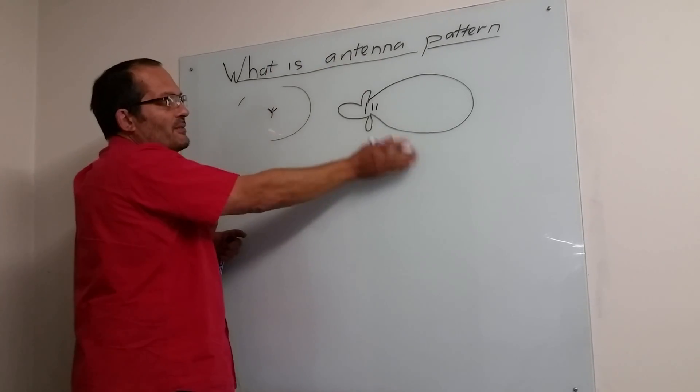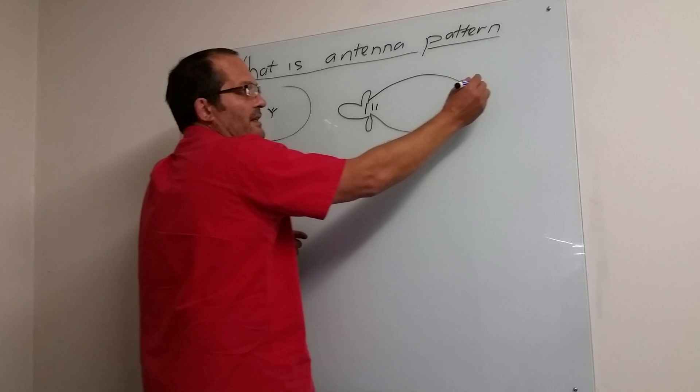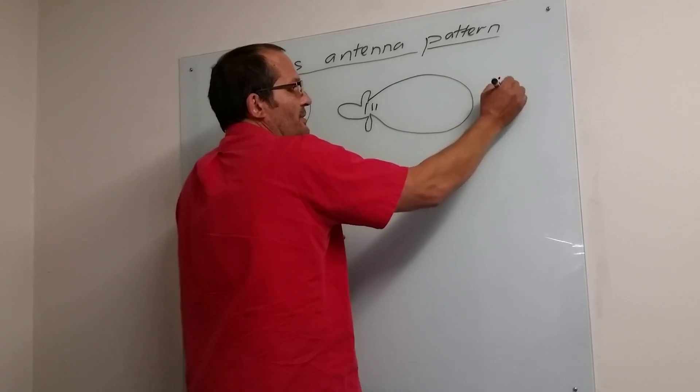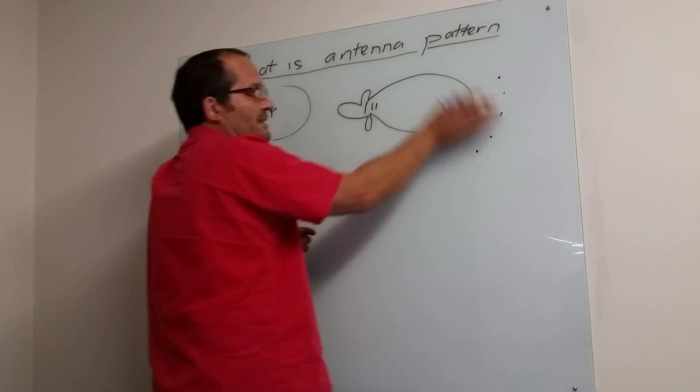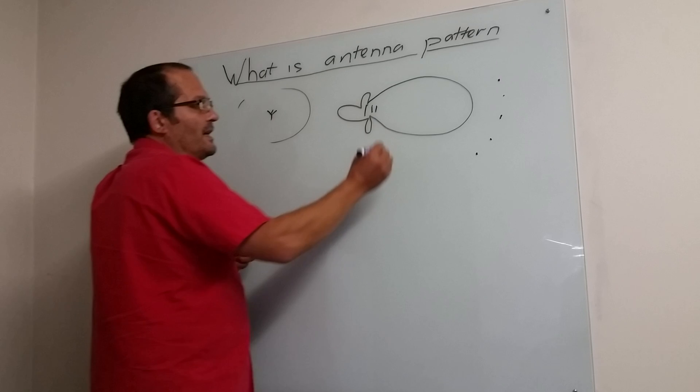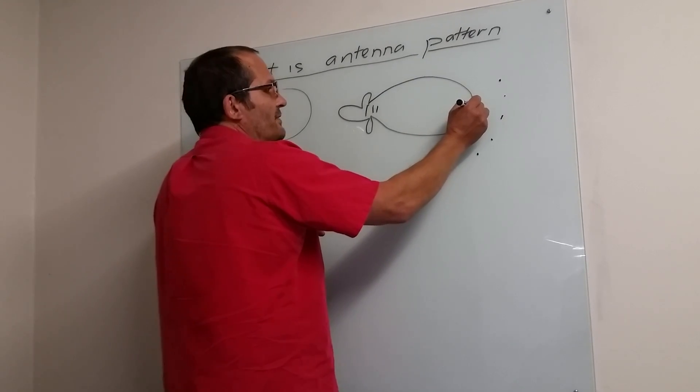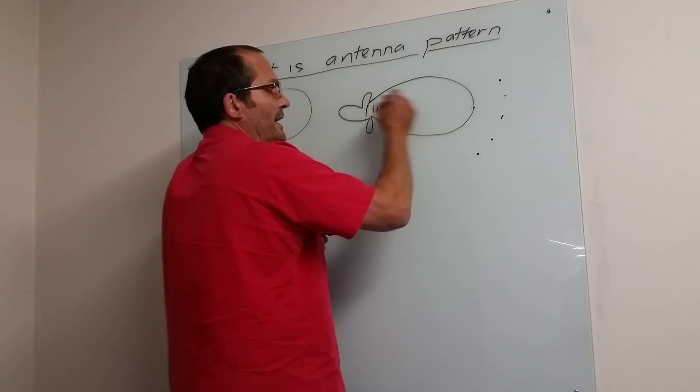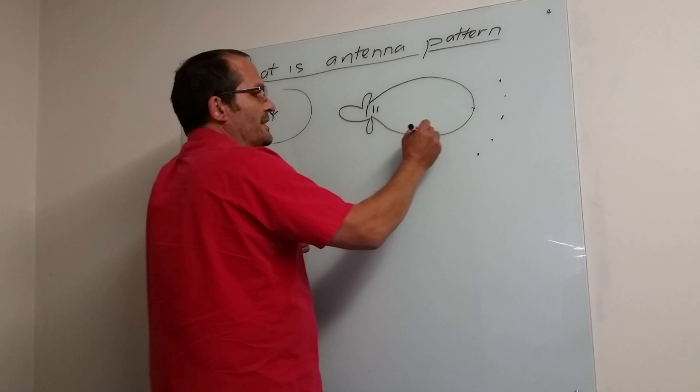This is what they would call an azimuth cut if this is along the earth. So in other words, if you've got people standing around here, and this is the surface up there, this would be an azimuth cut. And what this indicates is that most of it will be radiated in this direction, somewhat less towards the sides.